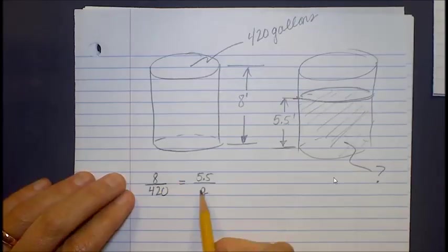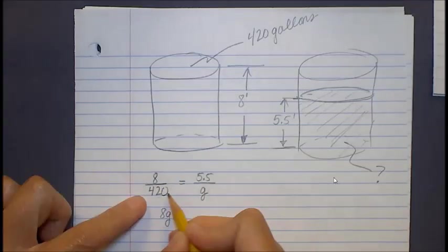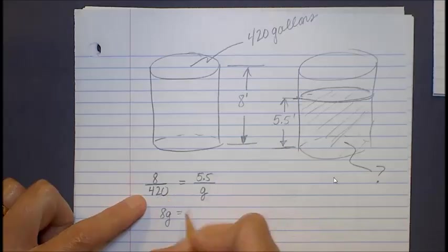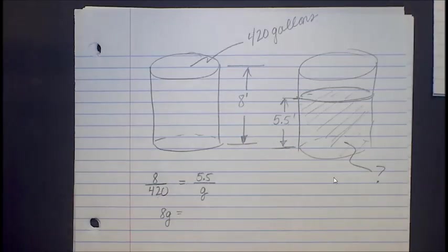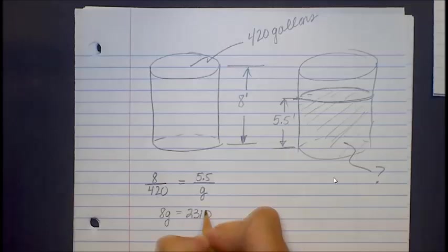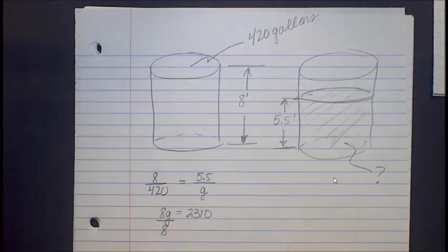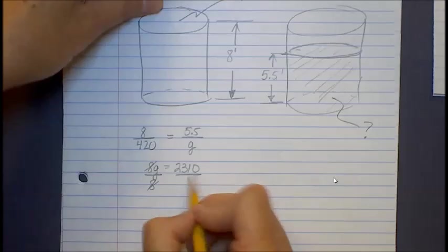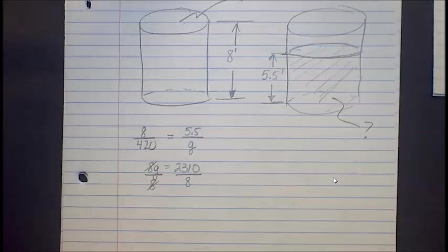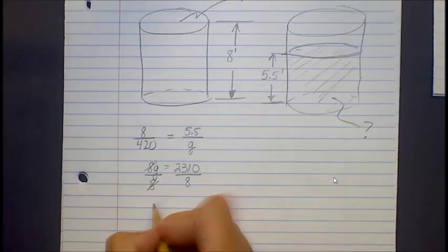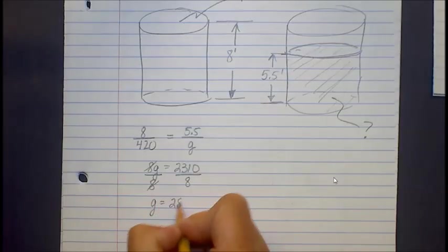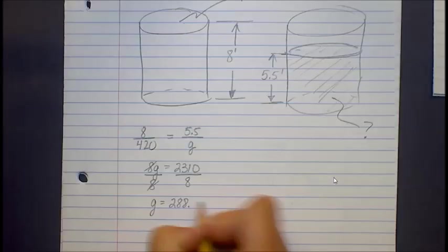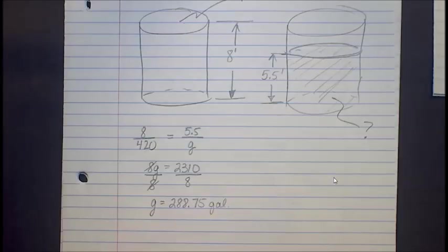So here we have a proportion that is set up for us. So we're going to take 8 times G. So 8G. Cross multiply 480 times 5 1/2. 480 times 5.5. And I'm going to get 2310. Solving for G here to get it by itself. So I'm going to divide by 8 on that side and divide by 8 on the right-hand side. So divide 2310 by 8, and we should get G equal to 288.75 gallons.